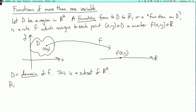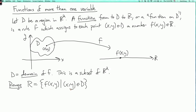Another related notion is the range R — the set of all values of f. The formal notation for it is the set of f(xy) such that xy is an element of D. If you haven't seen this notation before: curly brackets with a vertical line in the middle means the set of all things on the left side satisfying the conditions on the right side. So this is simply the set of all values of f, and it is a subset of the real line.